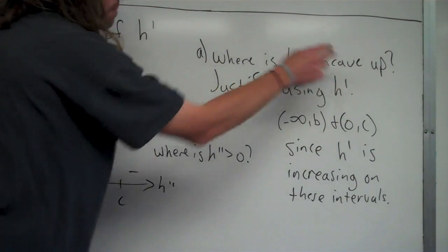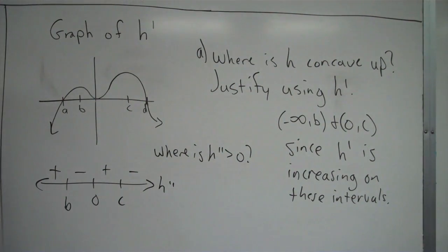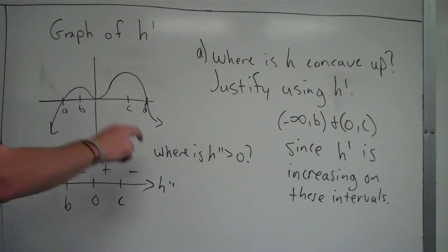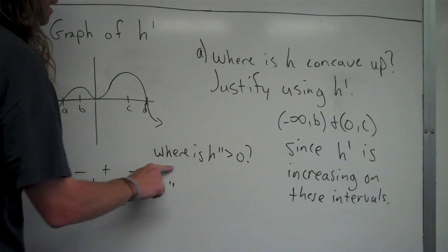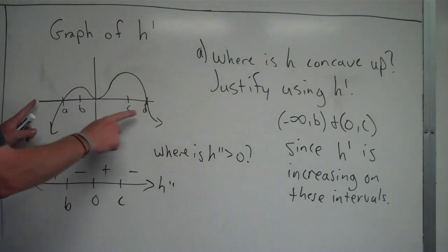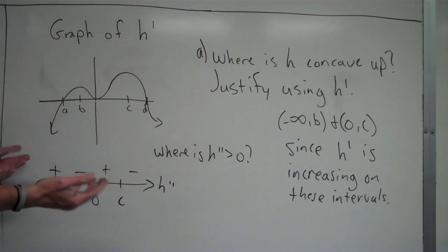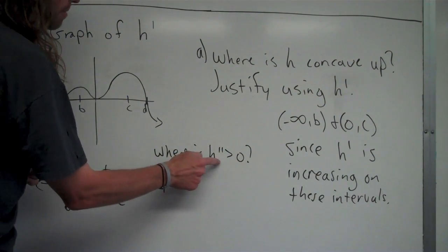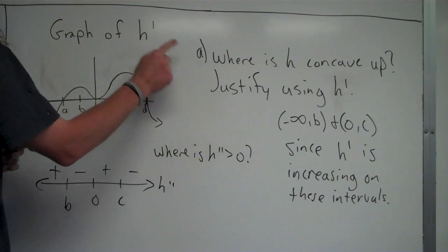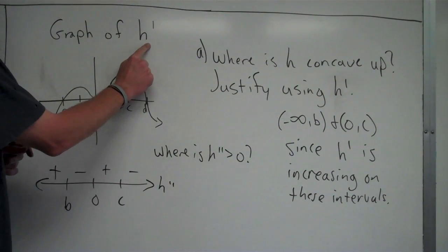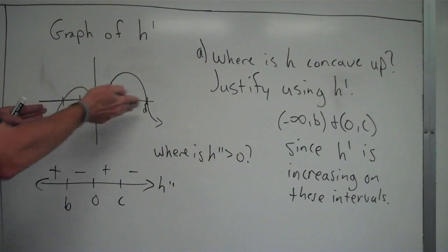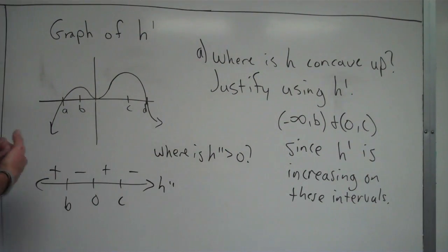Where is H concave up? We should be thinking second derivative — where is H double prime greater than zero? But we have a graph of H prime, so we have to think: H double prime is the derivative of H prime, or the slope of H prime. So we have to look at the slope of this graph in order to find the values of H double prime. And that's exactly what we did.